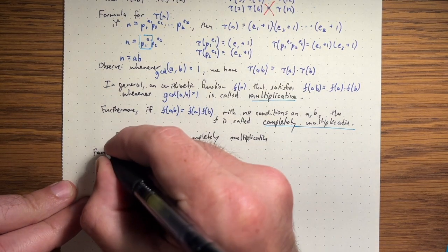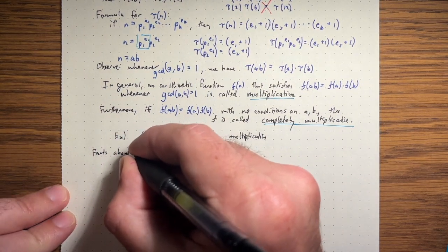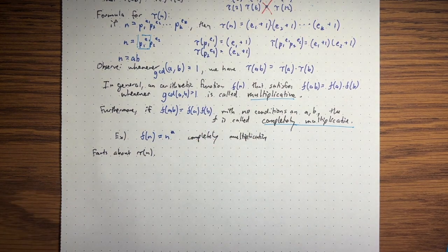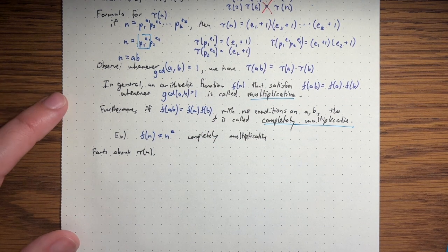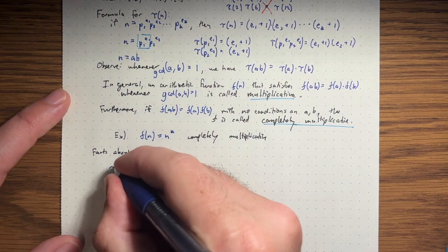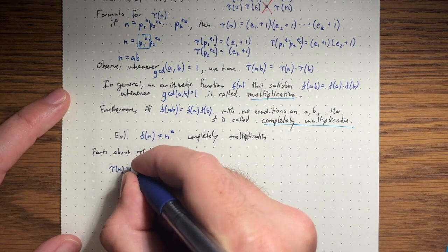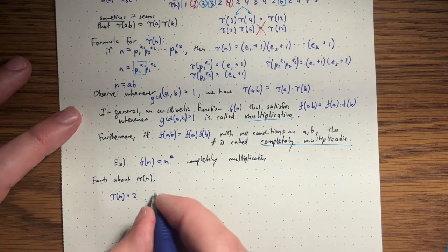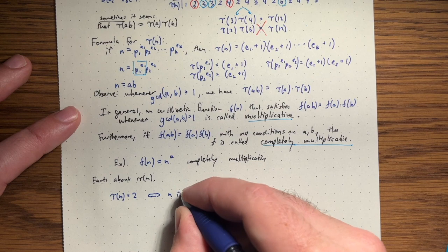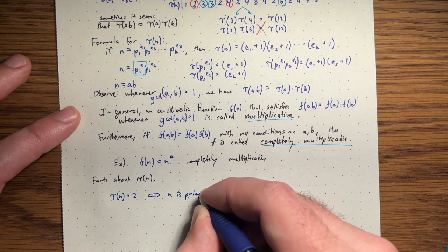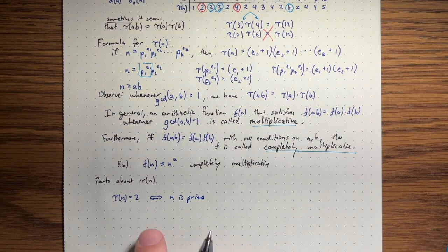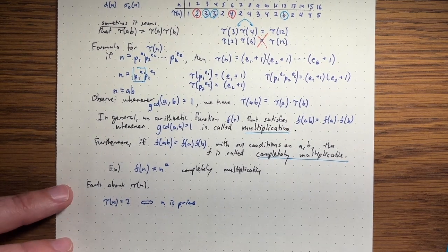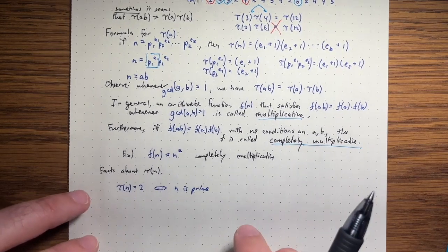Let's look at some facts about tau. First, tau(n) = 2 if and only if n is prime, essentially by definition — a prime number is one with exactly two positive divisors, 1 and itself.